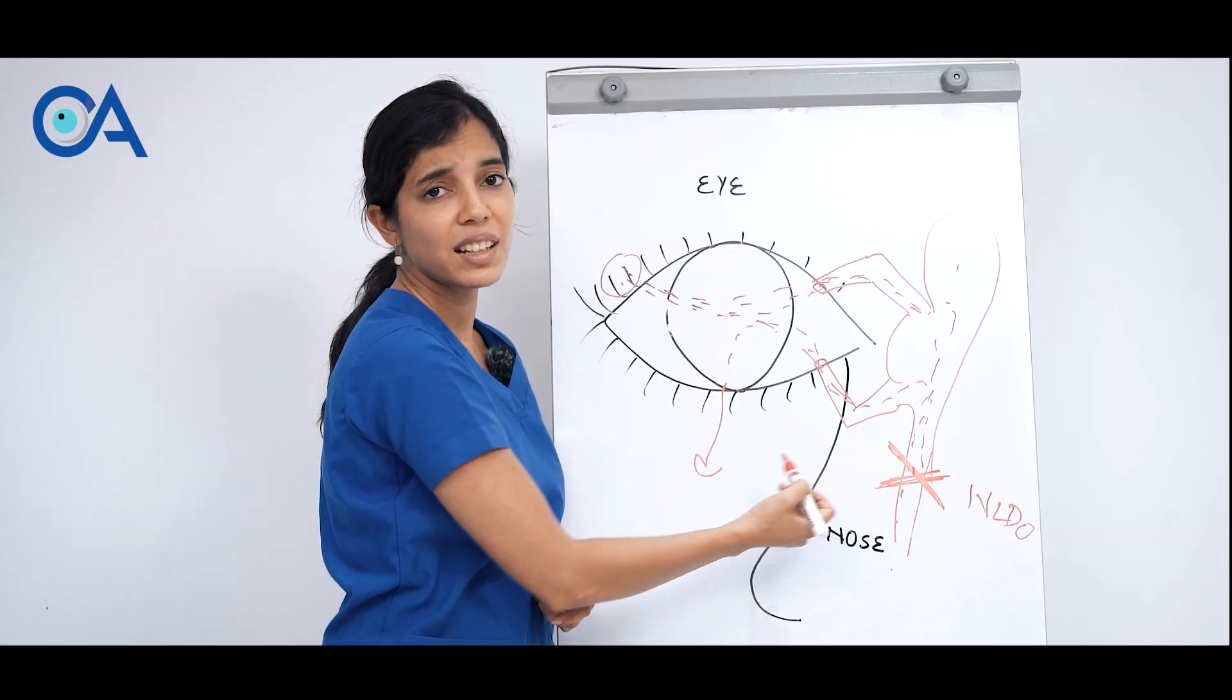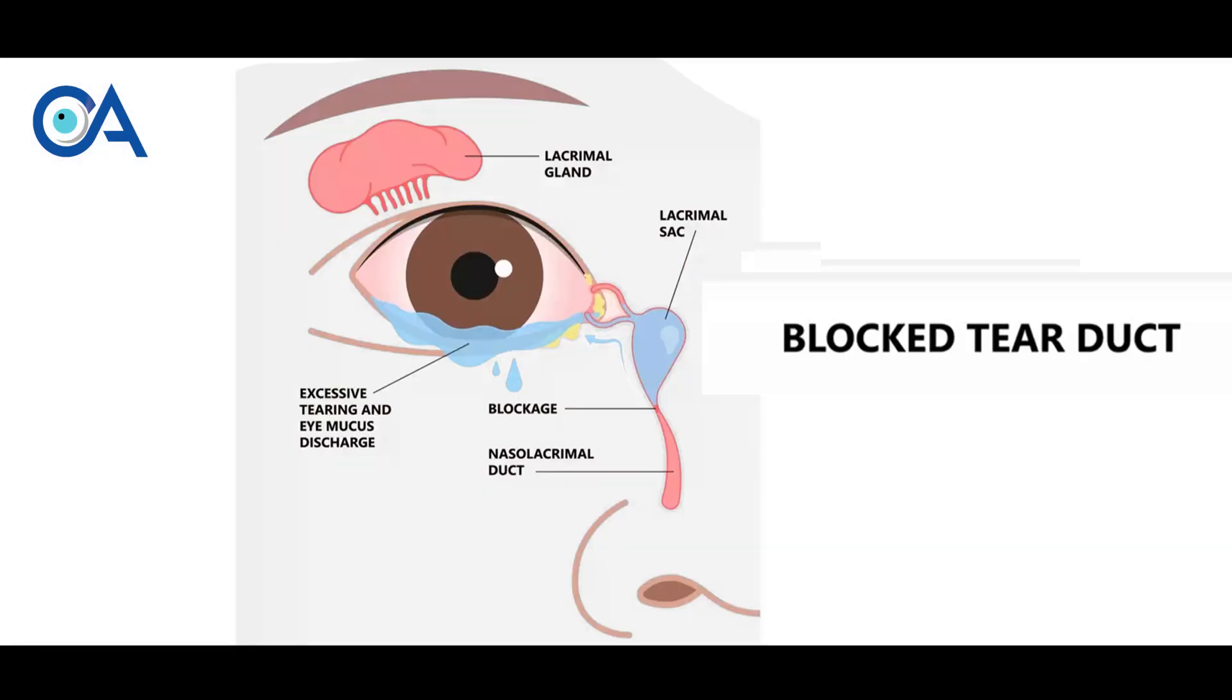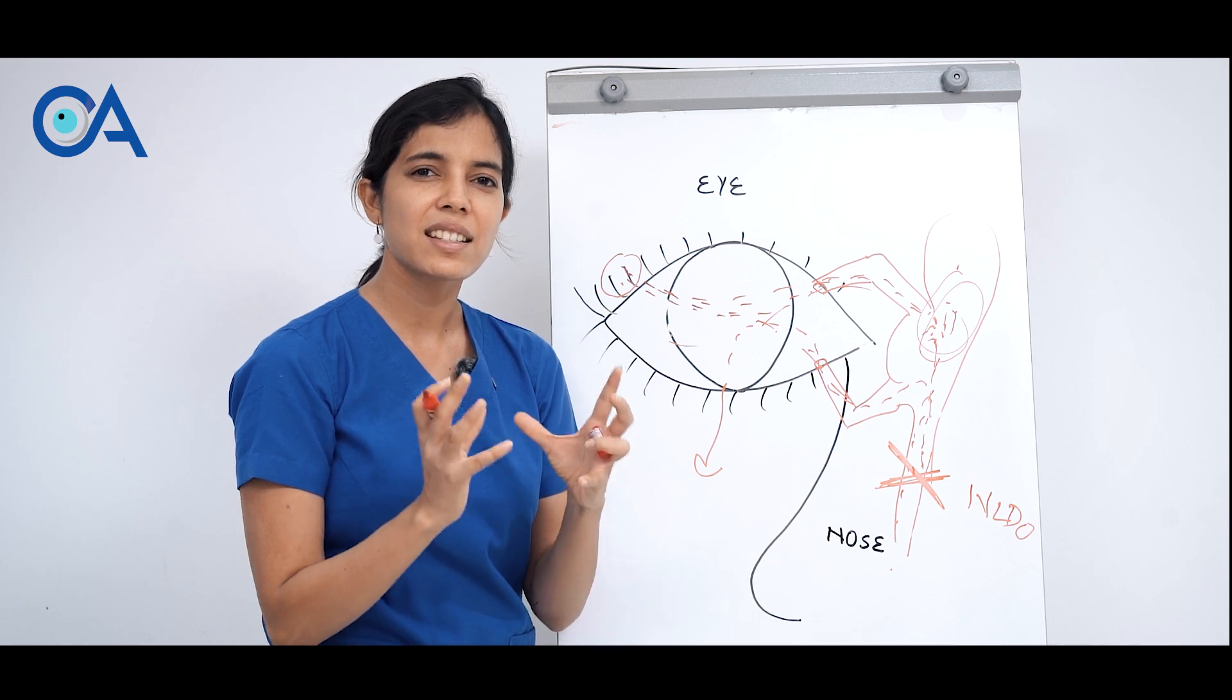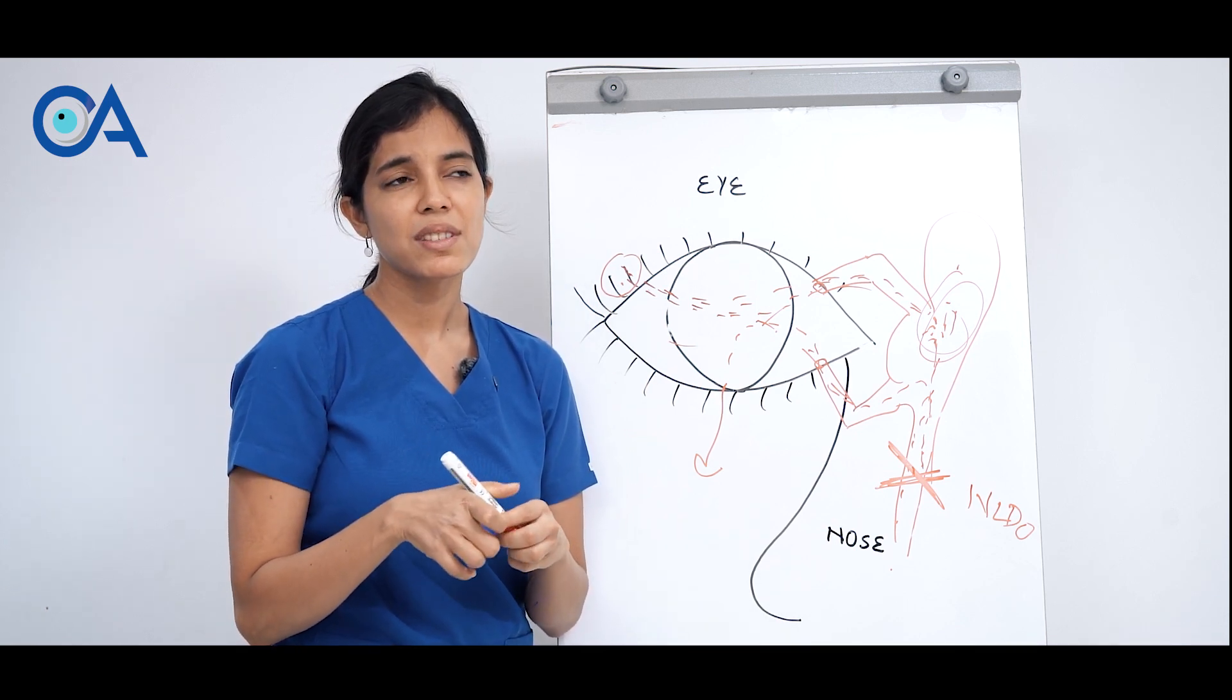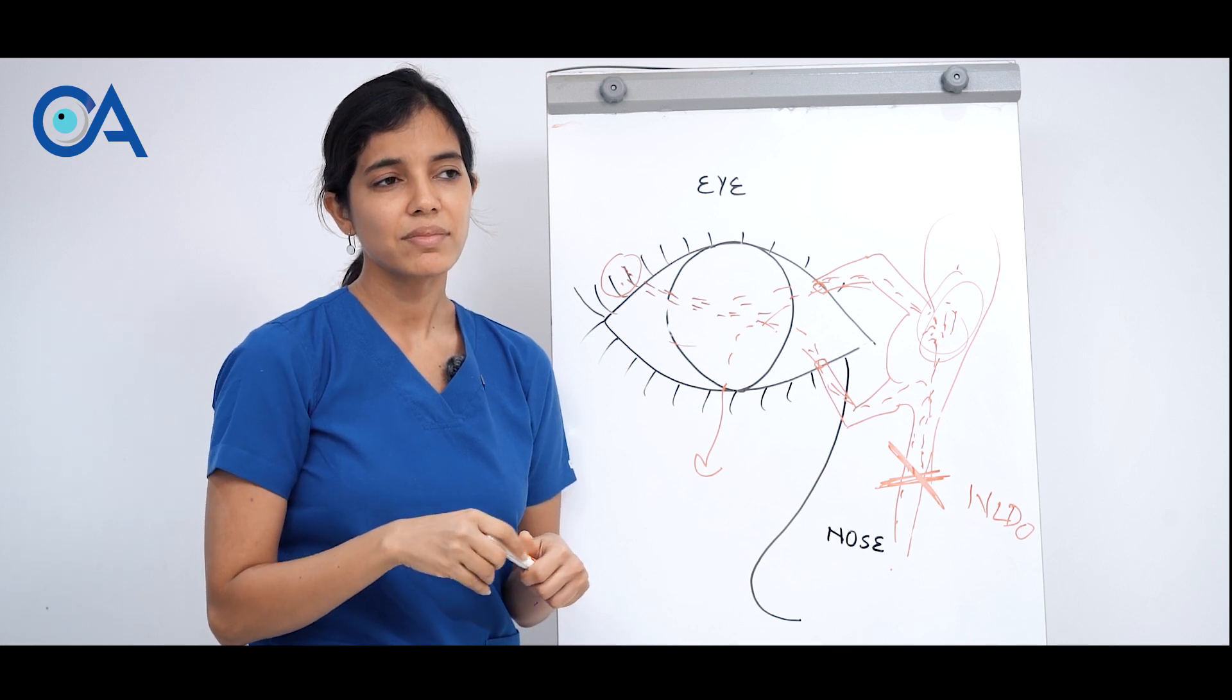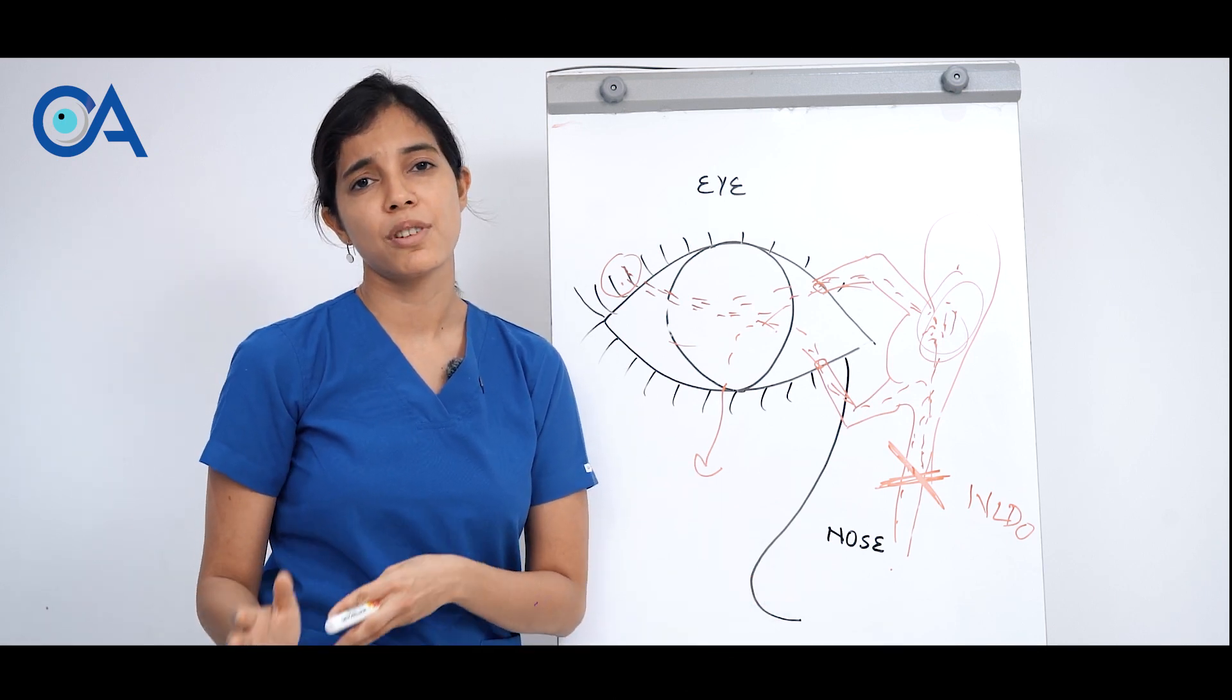Also one more thing that happens is tears get collected in the sac and this is a big problem because anywhere water is static, it is a nidus of infection. Here is our tear sac and tears get collected here because they are not able to drain downwards. This problem is known as nasolacrimal duct obstruction.